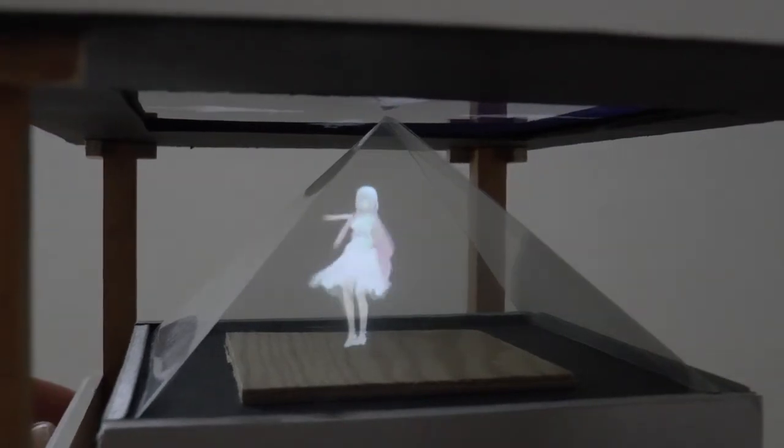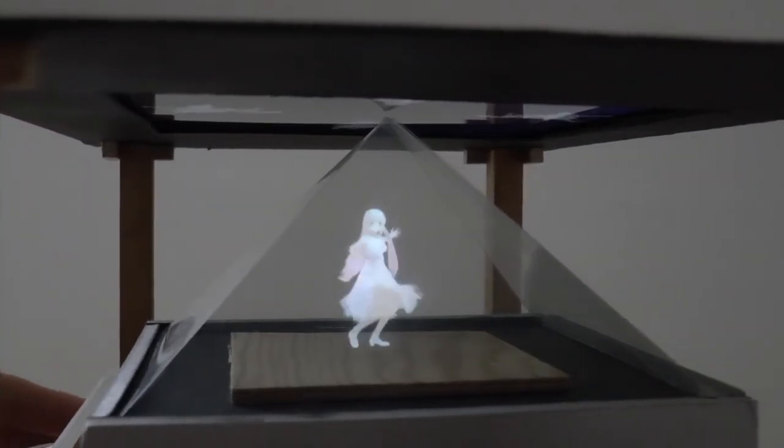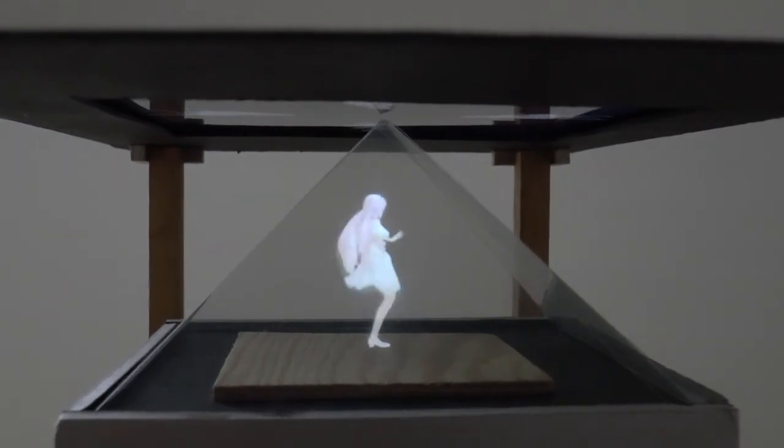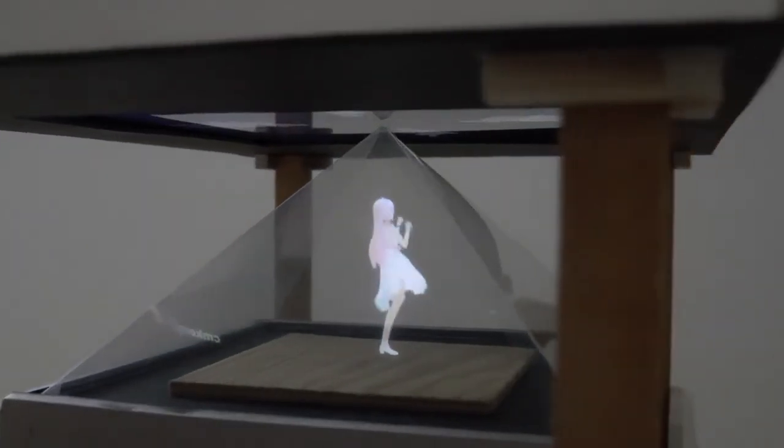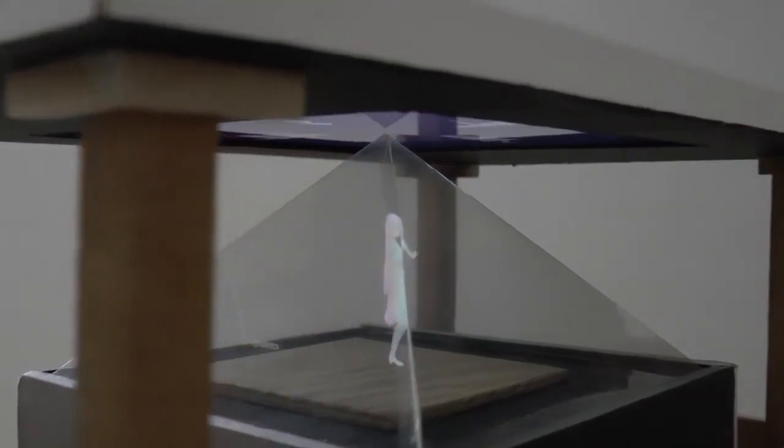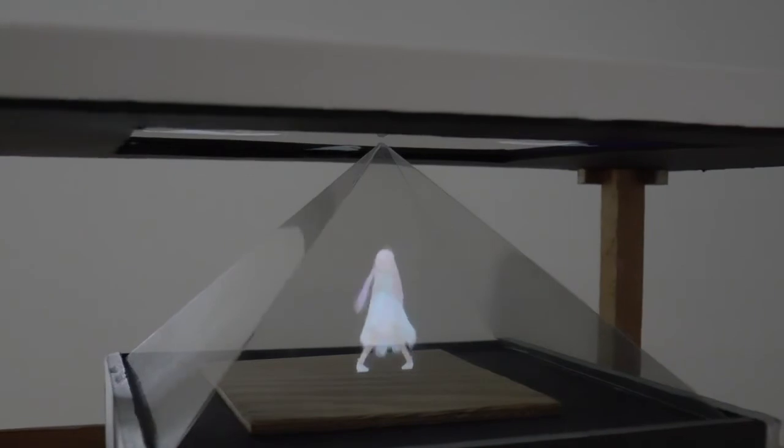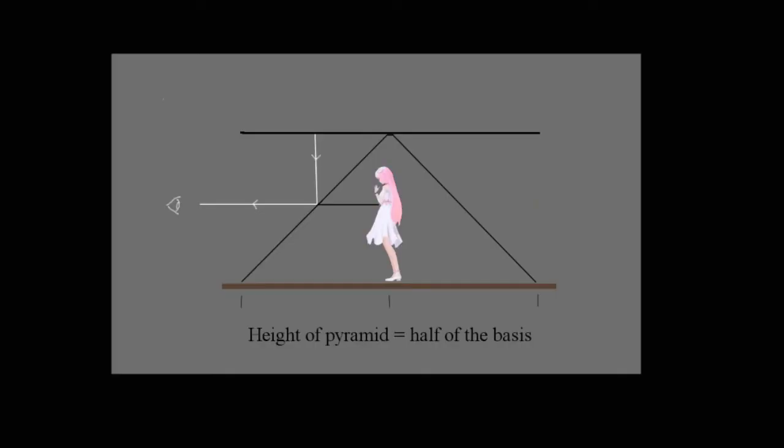On YouTube you can also find examples of a more advanced variant, namely a four-sided pyramid. It makes it possible to see the dancing figure from four sides.